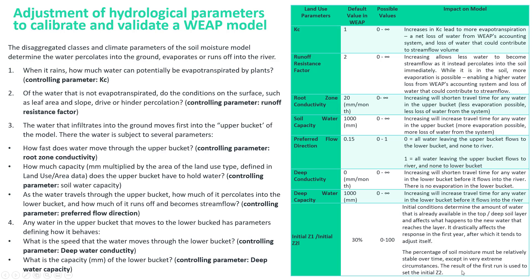For example, if you are looking to increase the peak flow response, it can be done by increasing the surface runoff. You can adjust the runoff resistance factor and the root zone conductivity because it is directly affected by these parameters.